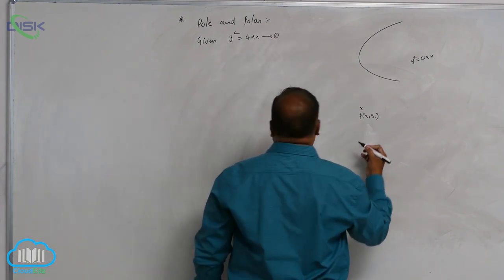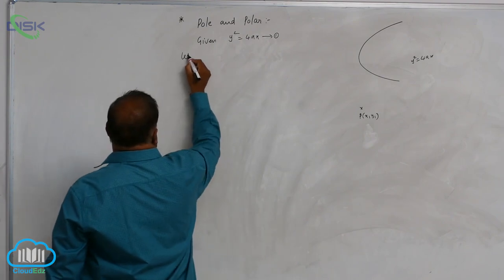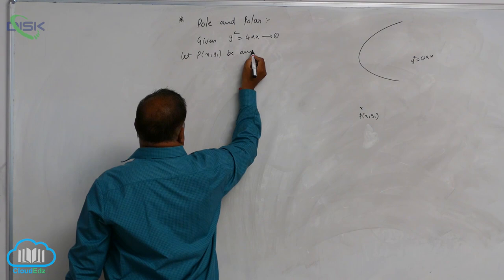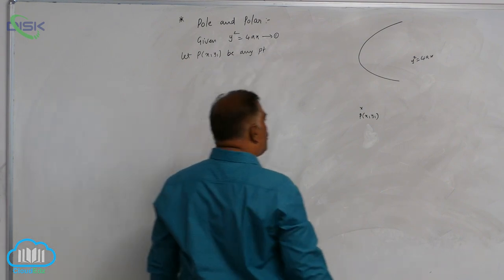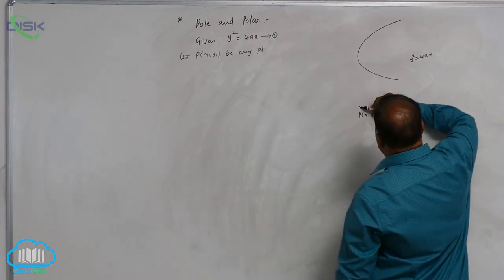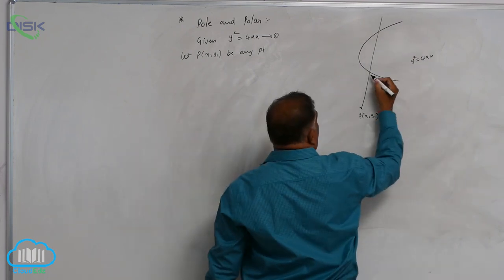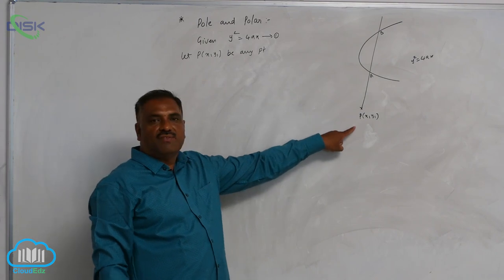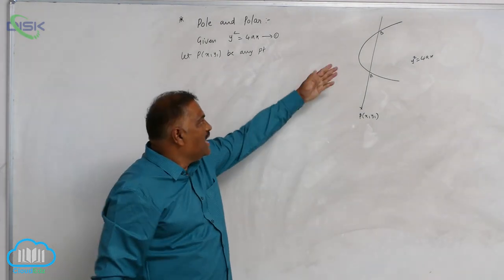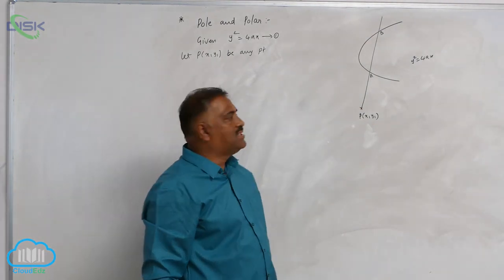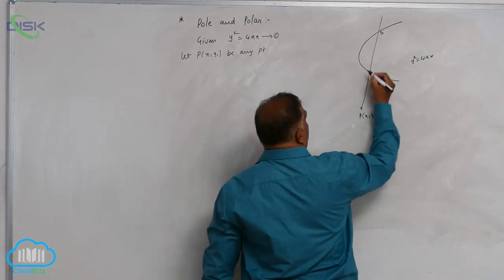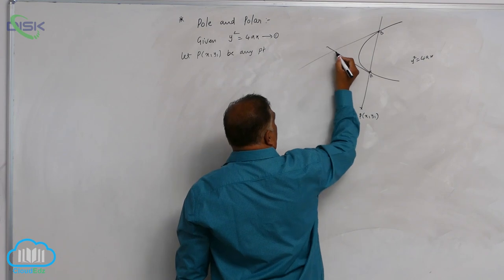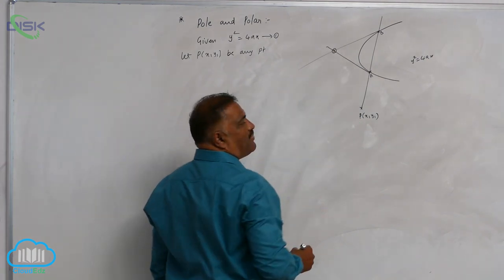Through this point P(x₁, y₁), if you draw a secant line, it meets the curve at two points A and B. Through P(x₁, y₁), if you draw a straight line, it will meet the curve in two points. At these particular points, you draw tangents — and this gives one particular point of intersection.